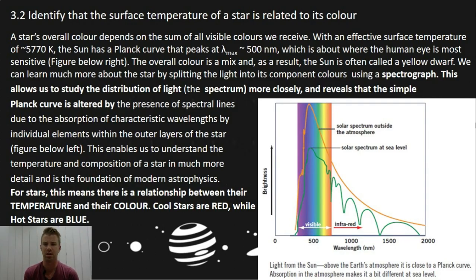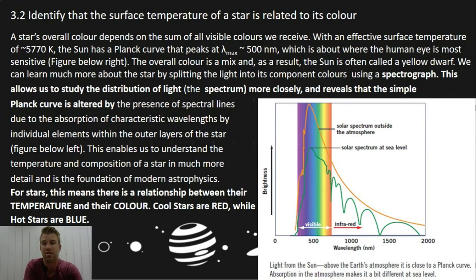What you need to know from this is essentially what has been highlighted, but also that the distribution of light more closely reveals a Planck's curve which is altered by the presence of spectral lines from the characteristic wavelengths of individual elements on the outer layers of stars.